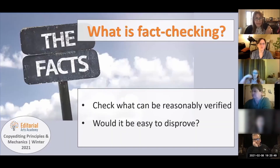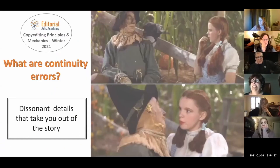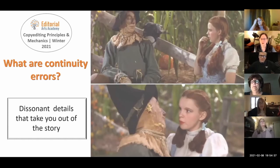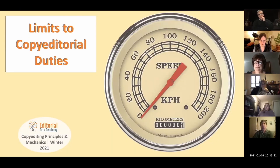What is fact checking? The Macmillan and Penguin Random House books I edit always require fact checking. What are continuity errors? They're details that don't match or don't ring true. What needs permission? Anything that is or might be copyrighted. Keep in mind the three basic rules.